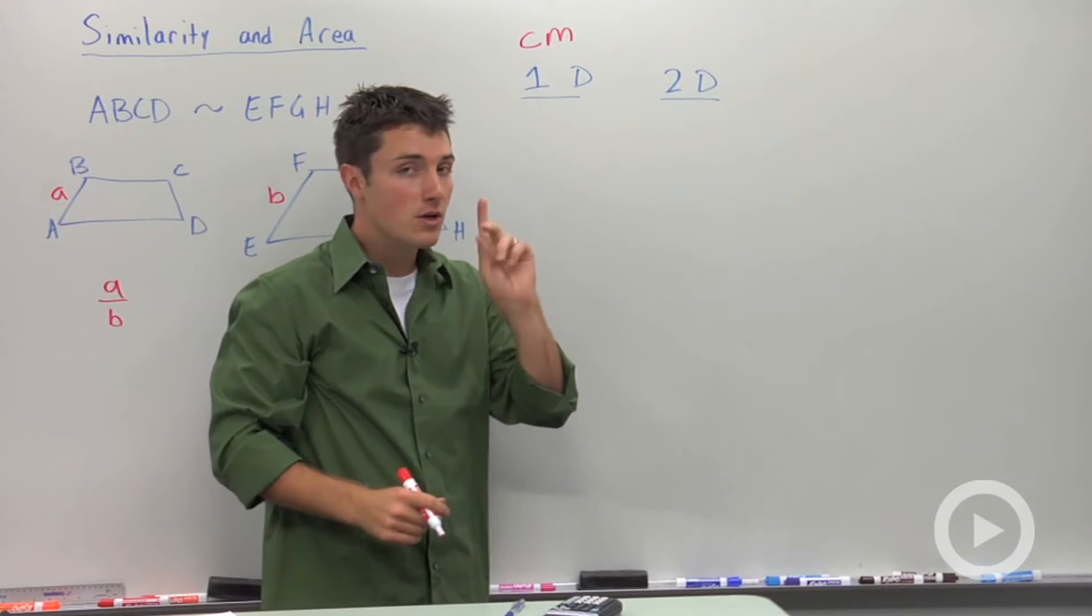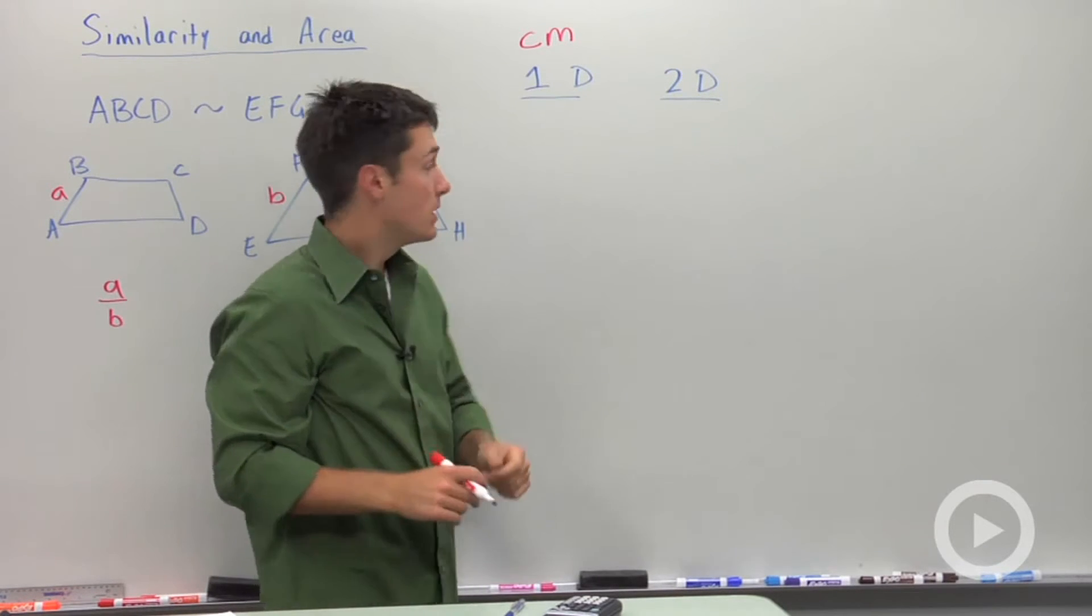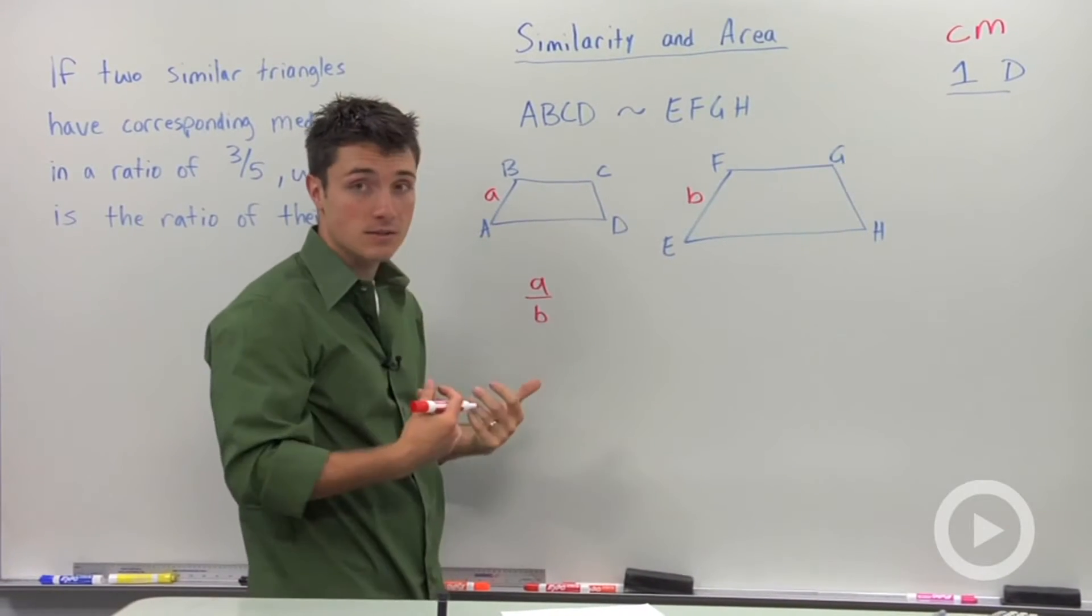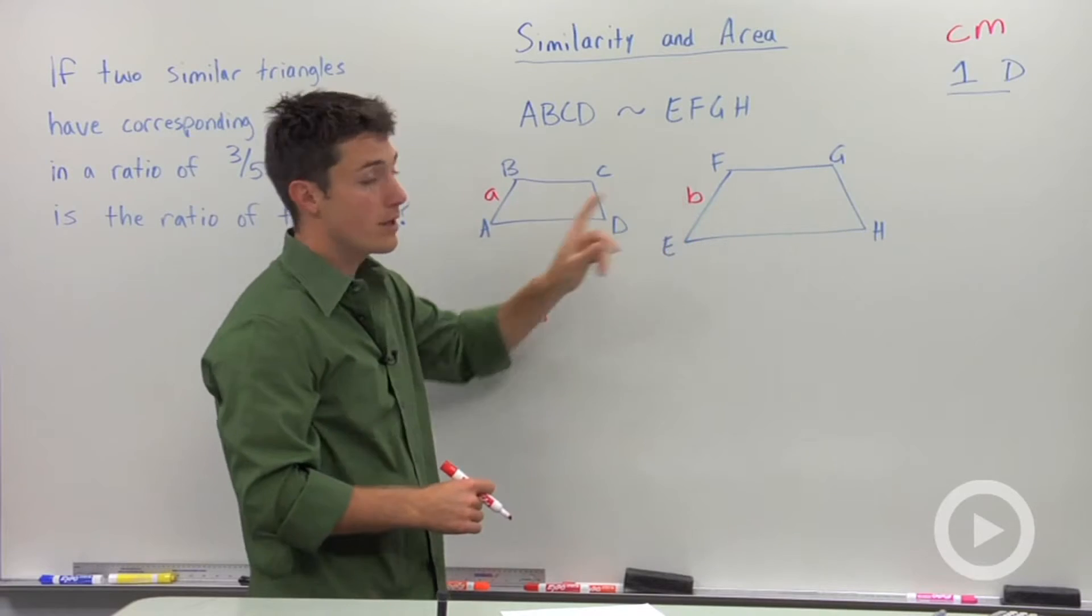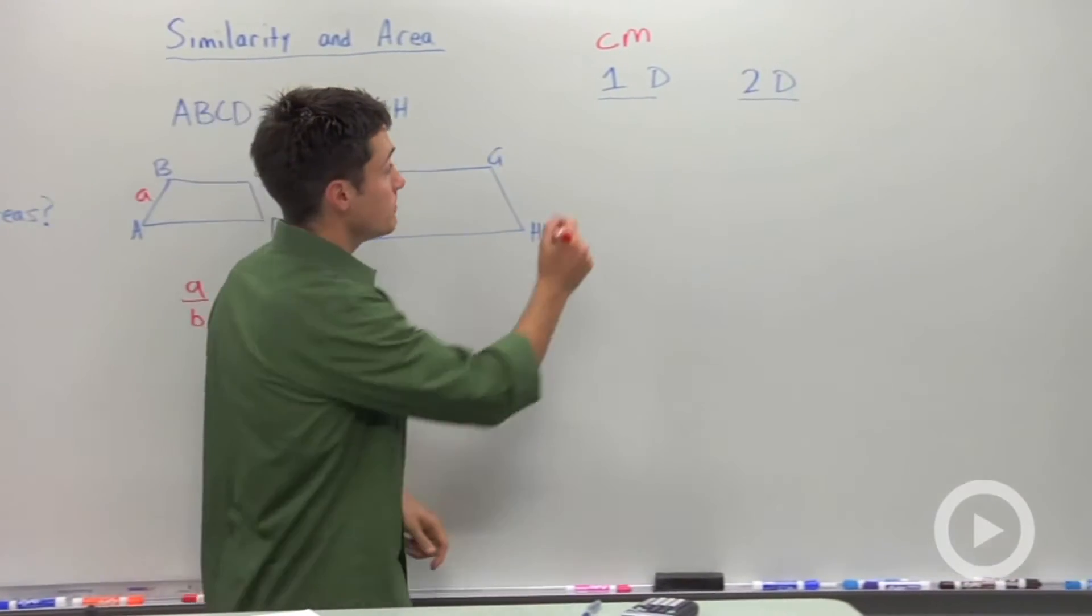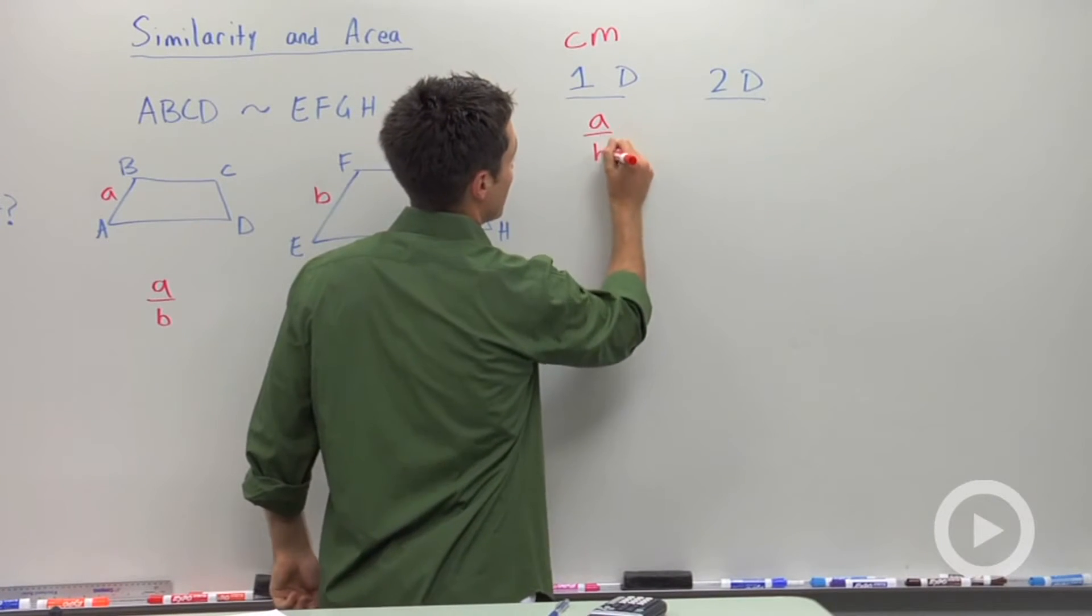miles. But it's a one dimensional attribute. Here in these two, the lengths are a distance. So the ratio of their one dimensional attribute is A to B. So let's go back and write that ratio for one dimensionality.